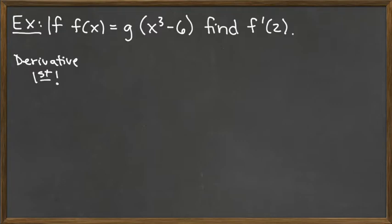That's with no twos plugged in anywhere. So we first need to find the derivative of f, so f prime of x. Well, f is defined to be a composition of functions. It's g of some function here. This x cubed minus 6 is really the u of x, the inside ugly function.